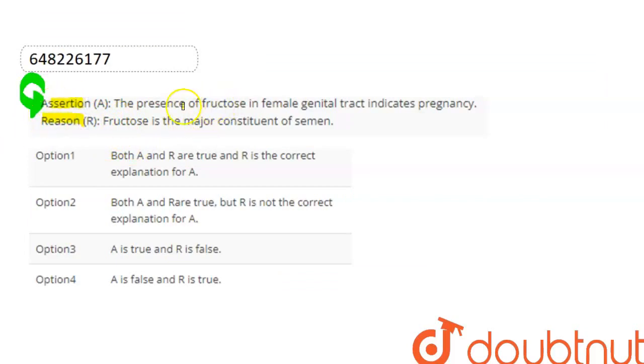The assertion statement given is: The presence of fructose in the female genital tract indicates pregnancy.